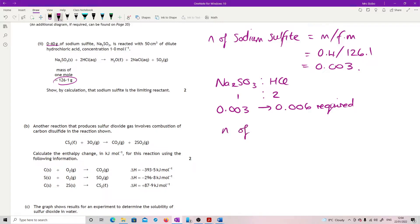So now I check my moles of hydrochloric to work out if I have that. So moles is concentration times volume. So 1 times 0.05. And so therefore I have 0.05, which is vastly in excess of 0.006.